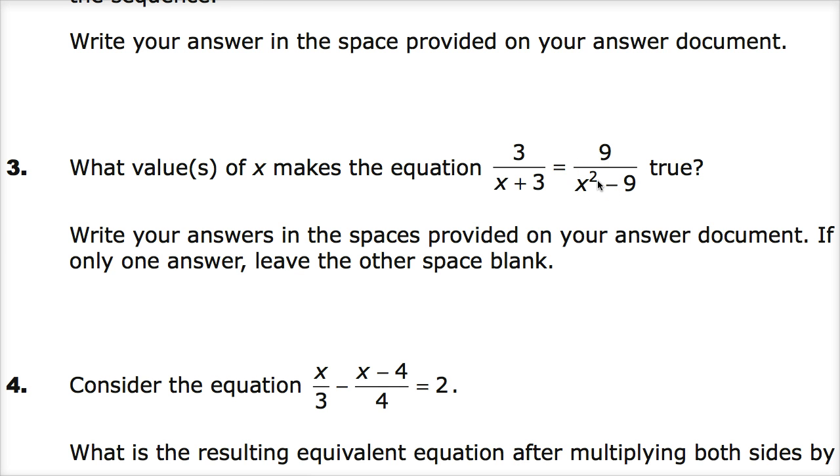So immediately, you could go ahead and think like, okay, I'm just going to do cross products or cross multiply and divide, whatever you say in your world. This and this. That's fine. You're welcome to do that. Just make sure that you multiply 9 by the entire quantity x plus 3. Maybe multiply 3 by the entire quantity x squared minus 9. You can't just multiply it by the x and x squared term. It doesn't work that way.